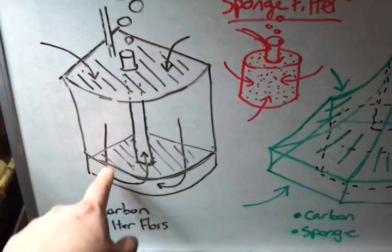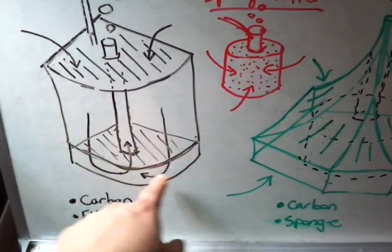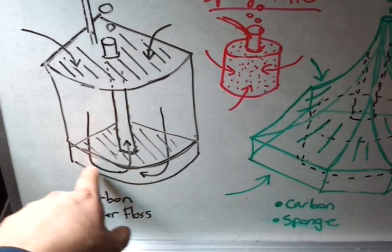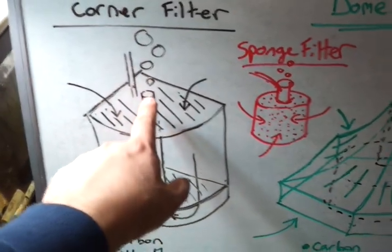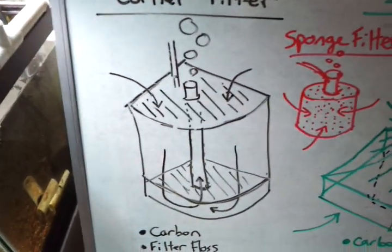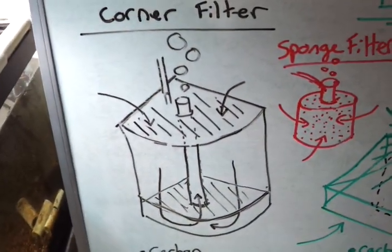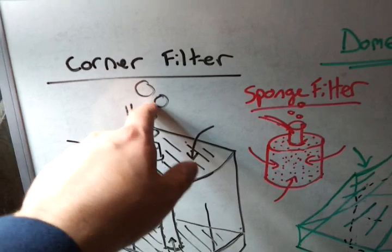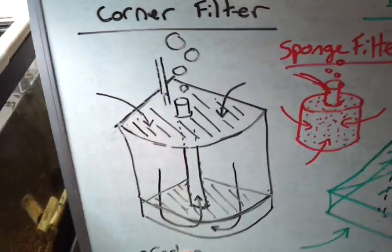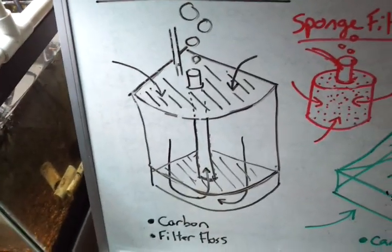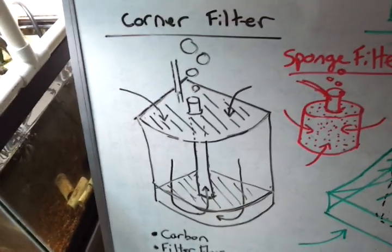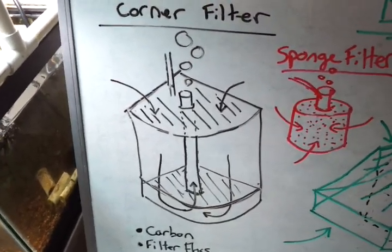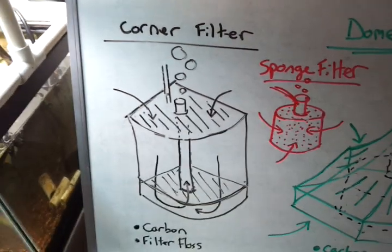And then the water comes through the bottom, which has an open chamber, which allows the water to then come up through the tube and then out the top. What that allows you to do is aerate the water while also filtering the water. And you don't require any expensive canister filters or hang on back filters or anything like that. It's just a nice little corner filter.